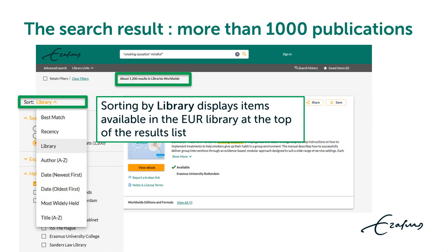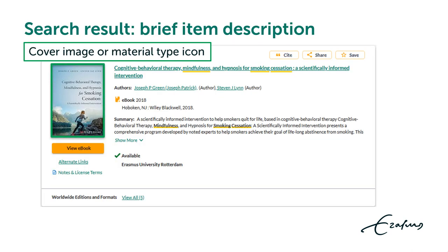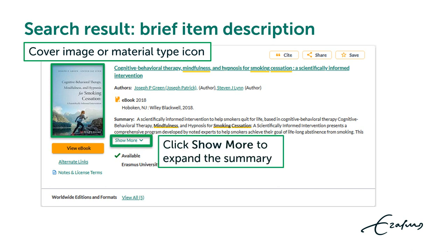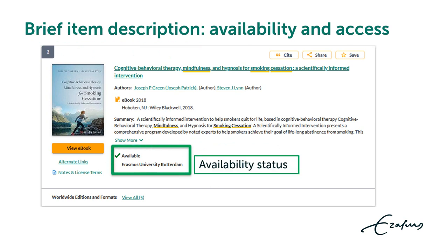The search returns more than 1000 publications. On the left are filter and sort options. Sorting by library, which is the default option, displays items available in the university library at the top of the results list. The brief item description displays a cover image, bibliographic information, part of the summary, and options to access full text and to cite, share, or save the reference.